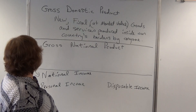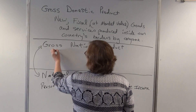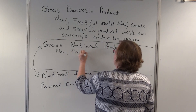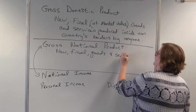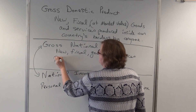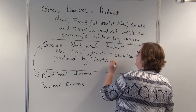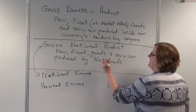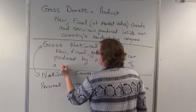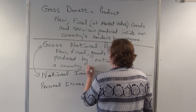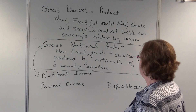Gross national product is closely related to national income. It's the new final goods and services, at market value, produced by nationals of our country — since this is America, by Americans — anywhere in the world. So for France, it would be new final goods and services produced by the French anywhere.